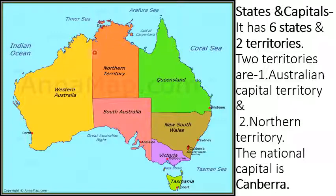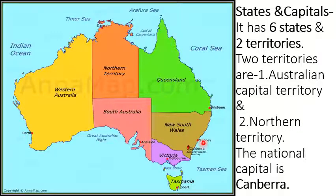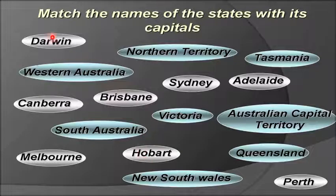The six states of Australia are: Western Australia with capital Perth, Northern Territory with capital Darwin, Queensland with capital Brisbane, South Australia with capital Adelaide, New South Wales with capital Sydney, Victoria with capital Melbourne, and Tasmania with capital Hobart. Now a small quiz for you — match the capitals with their states. Thank you, children.